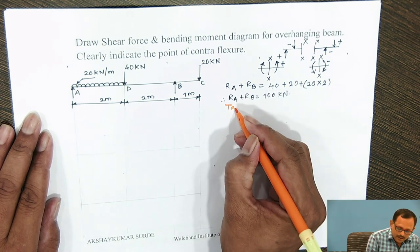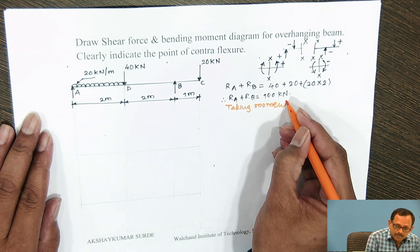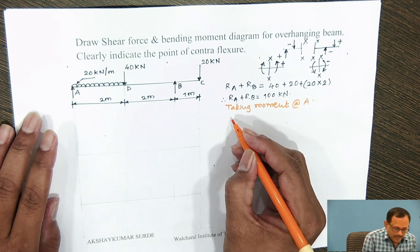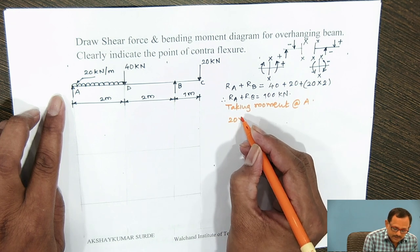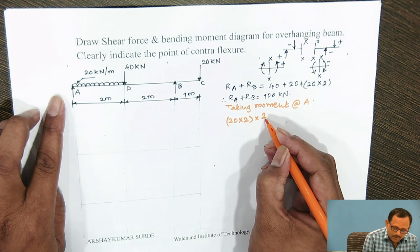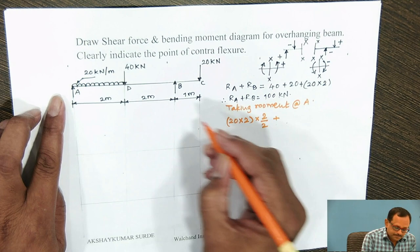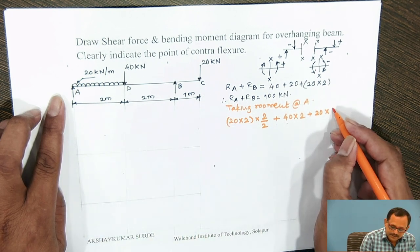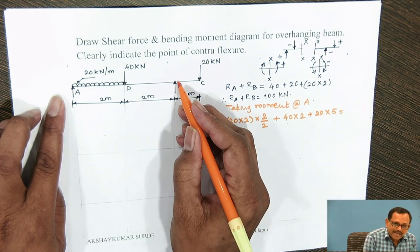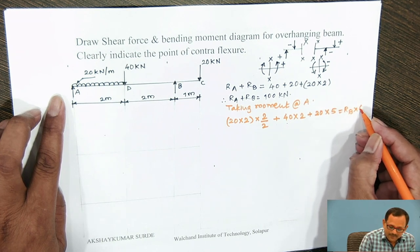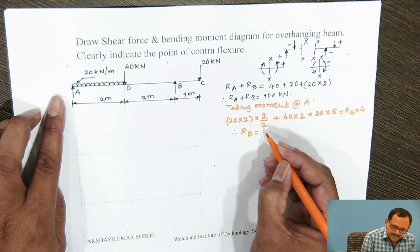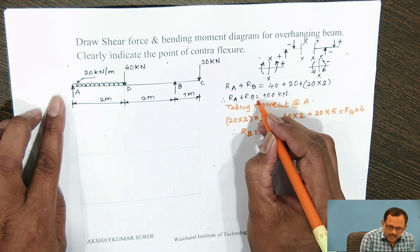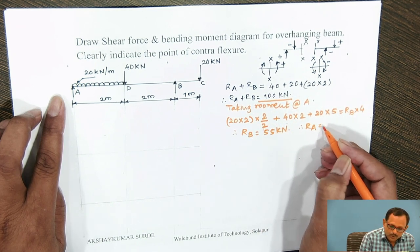Taking moment about point A, we equate clockwise and anticlockwise moments. The UDL of 20 kN/m over 2 m acts as a point load of 40 kN at 1 m from A (i.e., 2/2). Point load 40 kN at D is at 2 m from A. Point load 20 kN at C is at 5 m from A. Reaction R_B acts upward at 4 m from A. Solving: R_B into 4 gives R_B equal to 55 kN. Substituting back, R_A equals 45 kN.